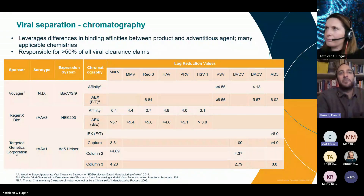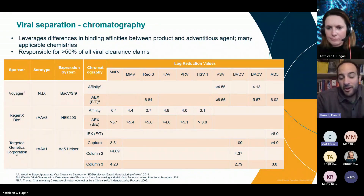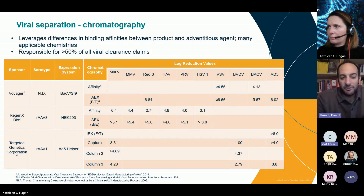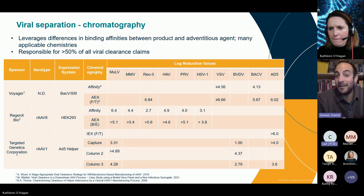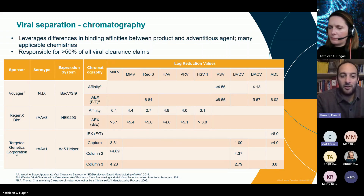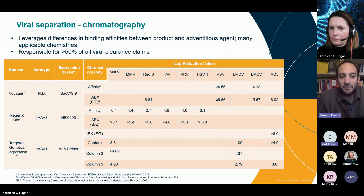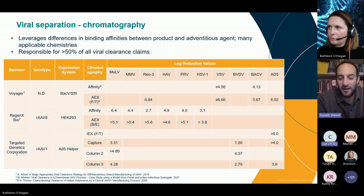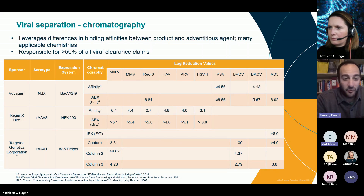The second big bucket mode of clearance is viral separation. The first primary separation method is chromatography, which generally leverages differences in binding affinities between the product and the adventitious agent — and there are many chemistries available. In AAV manufacturing processes, there are often two types of chromatography: an affinity or capture step, and then some type of polish. This table shows that a range of viruses can achieve considerable or significant clearance through those modes of chromatography.